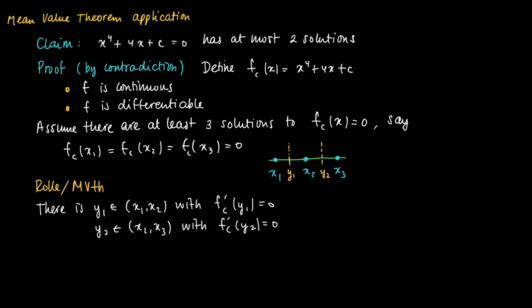It should be clear that y1 is unequal to y2, since the open intervals (x1, x2) and (x2, x3) are disjoint, so y1 cannot be equal to y2.